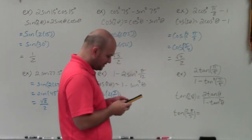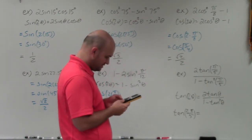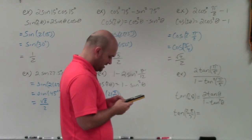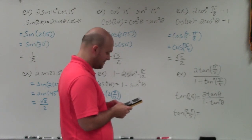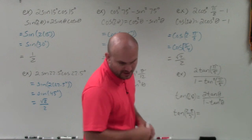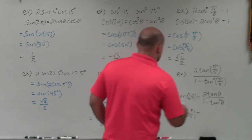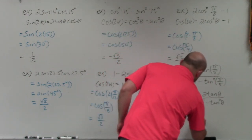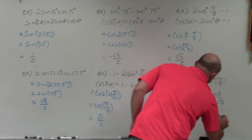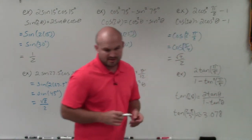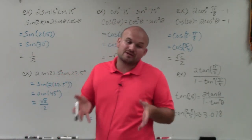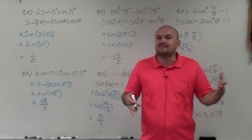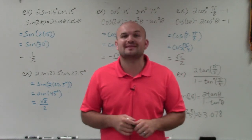OK, the calculator is in radian mode. So the tangent of 2π divided by 5 gives approximately 3.078. Since this is an approximate value, the answer is approximately 3.078 with some rounding. And that is how you rewrite the expression and find the exact value using the double angle formulas. Thank you.